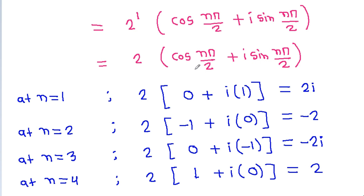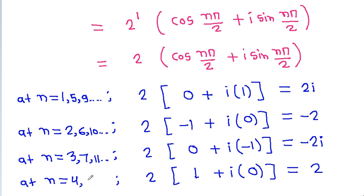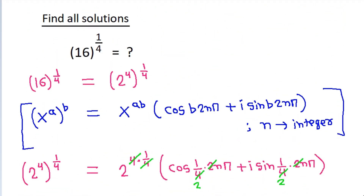Since sin and cos are periodic functions, at n equal to 5, 9, etc., we get the same value as n=1. At n equal to 2, 6, 10, etc., we get the same value. At n equal to 3, 7, 11, etc., and at 4, 8, 12, etc., we get the same values. So the four distinct values of 16 power 1 by 4 are: 2, minus 2, 2i, and minus 2i.